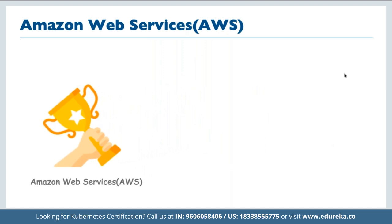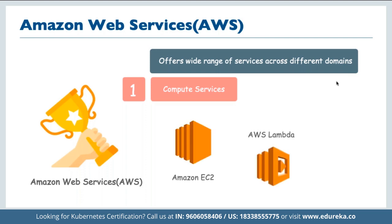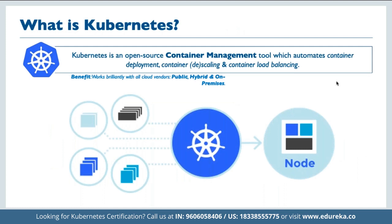AWS leads because of its large collection of services across different categories. For computation, we have Amazon EC2 for cloud virtual servers, Lambda for serverless computing, and ECS as Elastic Container Service — mostly used as a DevOps tool. Then we have Kubernetes, which is an open-source container management tool used for automating container deployment, scaling, and load balancing.